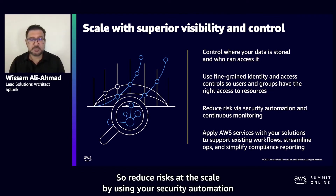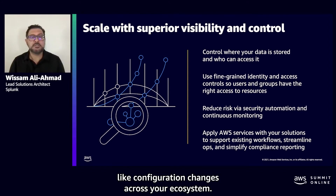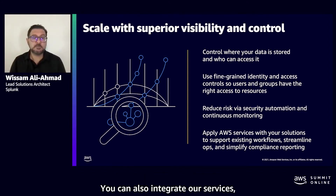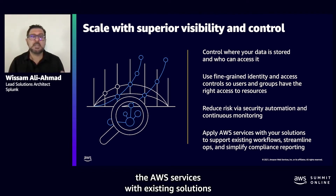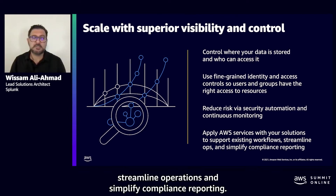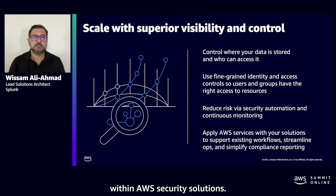To reduce risks at scale, by using security automation and activity monitoring services, you can detect suspicious security events like configuration changes across your ecosystem. You can also integrate AWS services with existing solutions to support existing workflows, streamline operations, and simplify compliance reporting. That's the visibility you gain and all the different use cases with these AWS security solutions.